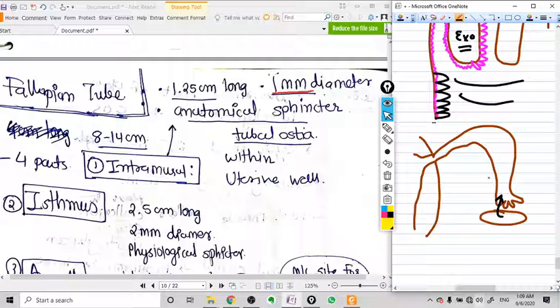We have divided the tube into four different parts. The first part is the intramural part. Intramural part is nothing but the part of fallopian tube inside the wall of the uterus. This part is very constricted, only 1 mm wide.